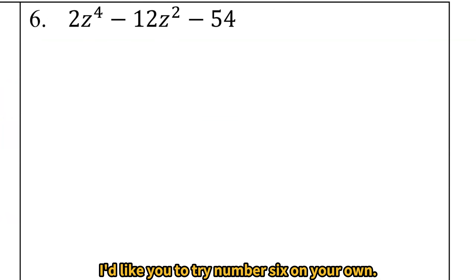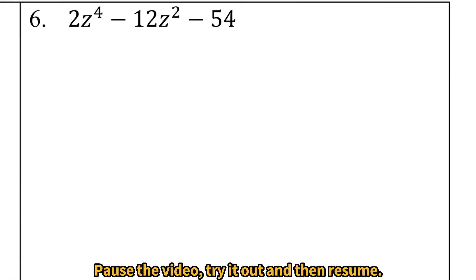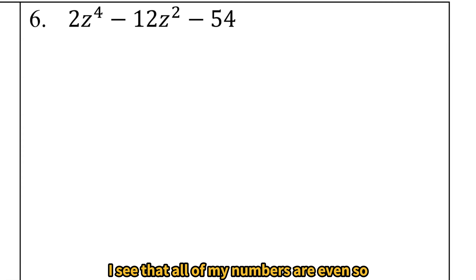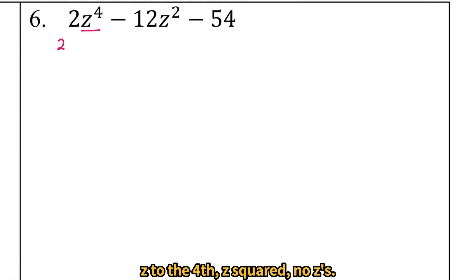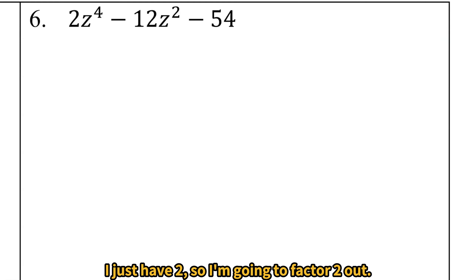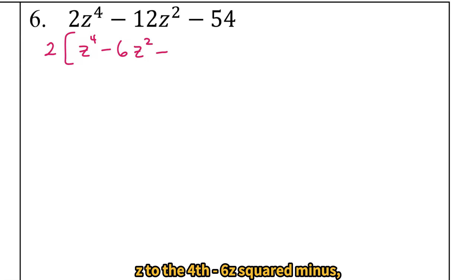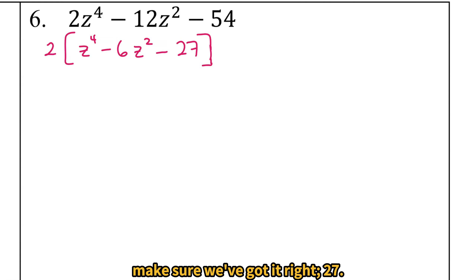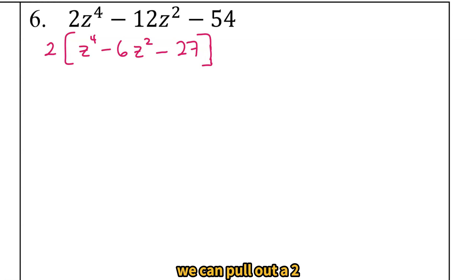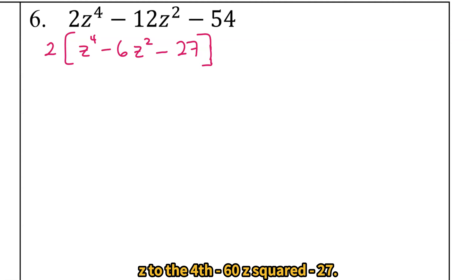I'd like you to try number 6 on your own — pause the video, try it out, and then resume. I see that all of my numbers are even, so I'm going to have 2 in my greatest common factor. Looking at the variables: z to the fourth, z squared, no standalone z's — so I don't have a variable in the greatest common factor, just 2. Factoring out 2 from 2z to the fourth minus 12z squared minus 54 leaves us with 2 times z to the fourth minus 6z squared minus 27.